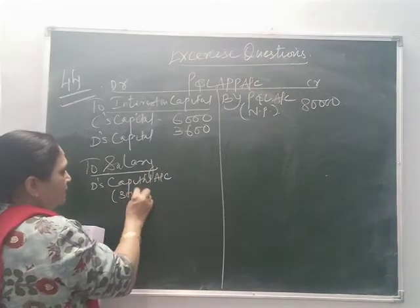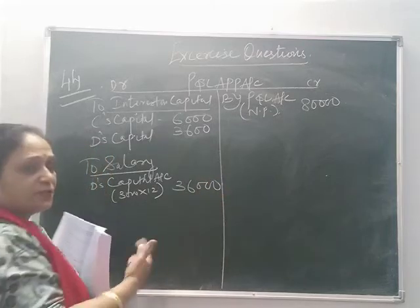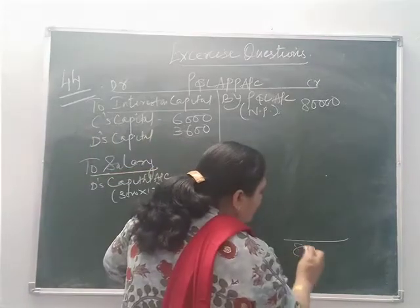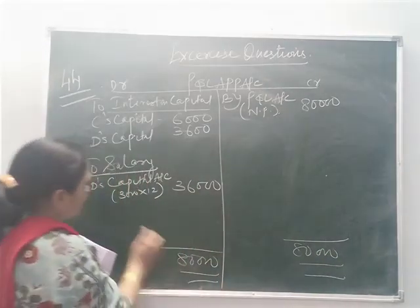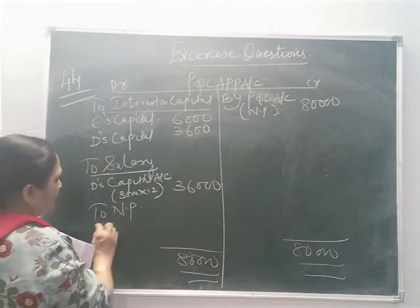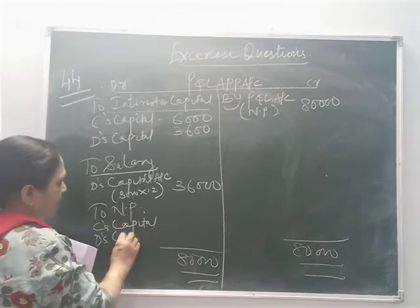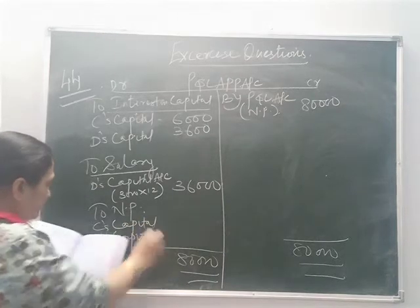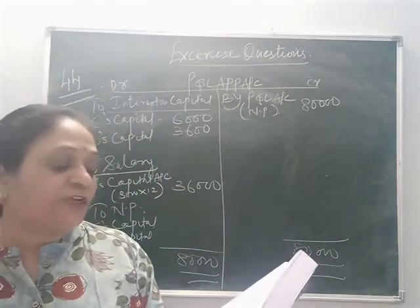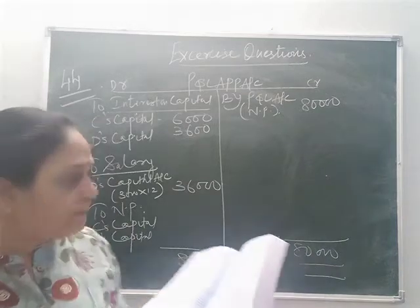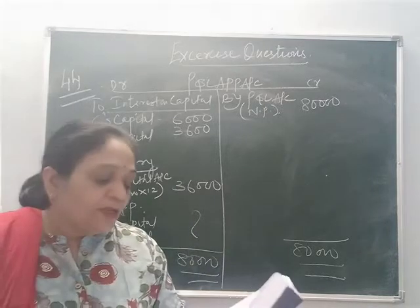3,000 into 12 is 36,000 — this much is to be provided. Out of the profit of 80,000, you will calculate the net profit remaining and divide it into C's capital and D's capital account. The ratio among the partners is not specified, so C and D will share it equally. Find out this profit and complete the question.